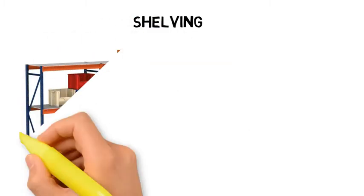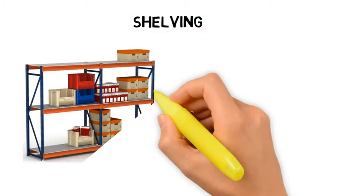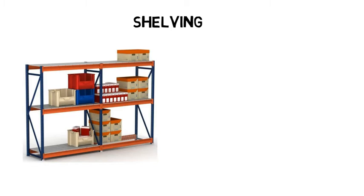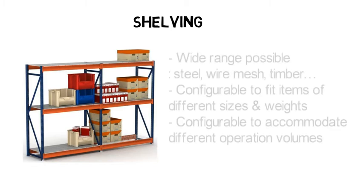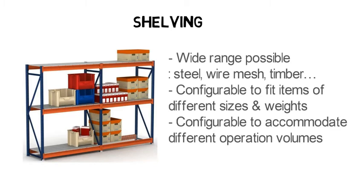Shelving is a relatively cheap and efficient manual storage system, commonly used for small loads including cartons, packages, and loose items in general. There are a wide range of shelf types possible: steel panels, wire mesh, timber boards, etc. Shelves are configurable to fit items of different sizes and weights, using combinations of frames of different heights and beams of different load-bearing capacities. They are also configurable to accommodate different operation volumes.